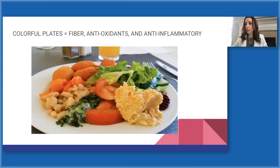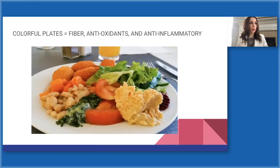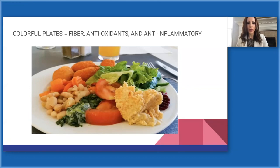Here's an example of what a Mediterranean or DASH plate looks like. Notice it has lots of colors and vegetables — protein from hummus, some beans. The general rule is: the more color, the more fiber, the more antioxidants, and the more anti-inflammatory the food will be for you.